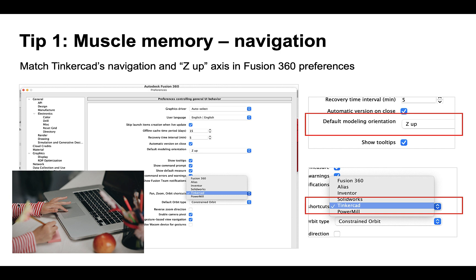In Fusion 360's preference menu, you can go into Pan, Zoom, and Orbit shortcuts and choose Tinkercad from the list of options. This is great if you're used to Tinkercad's navigation — it allows you to rely on the muscle memory you've already built. Remember that in Tinkercad, when you right-click you can orbit, but in Fusion 360 by default right-clicking gives you menus. I also suggest checking that the up axis is set to Z — look for Z up in the default modeling orientation menu, which is also what Tinkercad uses.